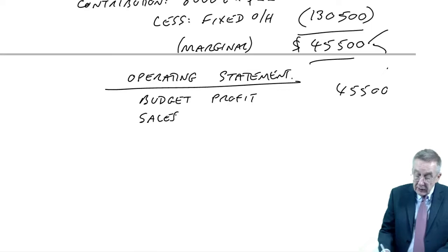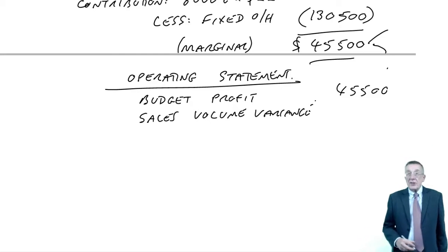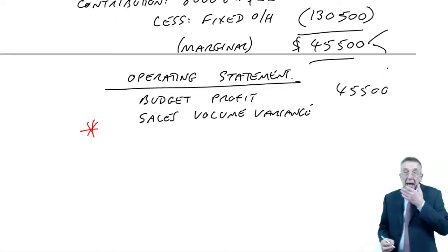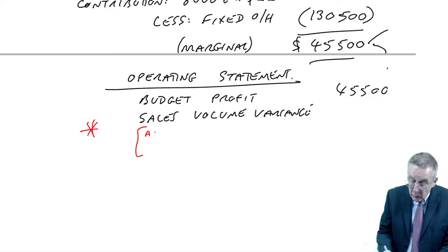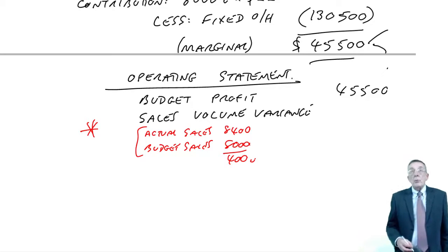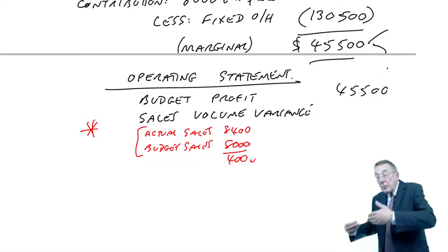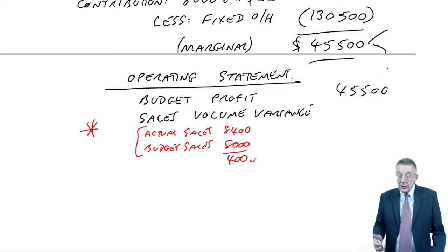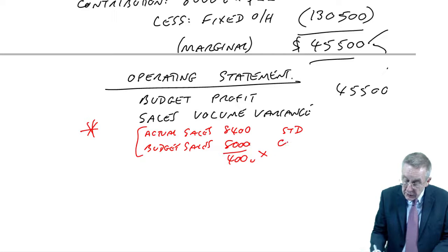Why is the actual profit going to be different? Well, as before, the first thing is the sales volume variance. Sell more units, clearly you expect more profit. However, this is the first of the two things that change. Just as before, we compare the actual sales with the budget sales. We actually sold 8,400, we budgeted on 8,000, we sold 400 more units. When we were doing absorption costing, more units, more profit, we costed at standard profit per unit. With marginal costing, because fixed overheads stay fixed, extra units mean extra contribution. We cost at the standard contribution per unit.